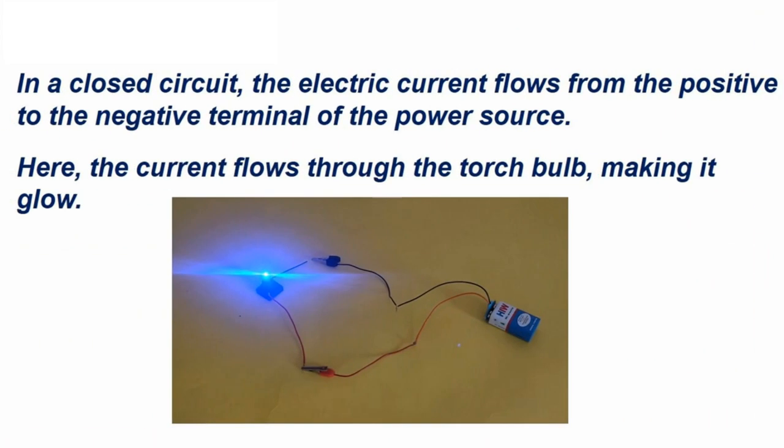Here is the reason. In a closed circuit, the electric current flows from the positive to the negative terminal of the power source. Here, the current flows through the torch bulb, making it glow.